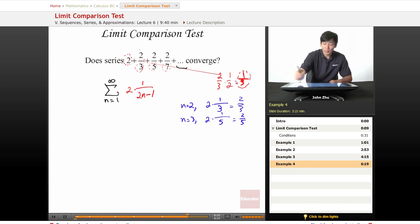So let's go ahead and compare this expression, 2 over 2n minus 1, with something. Let's compare it with the core term of this expression, 1 over n. We know that 1 over n is a harmonic series, which always diverges.